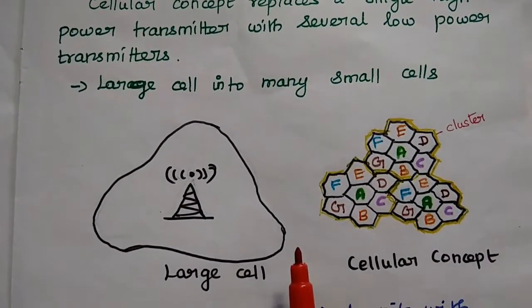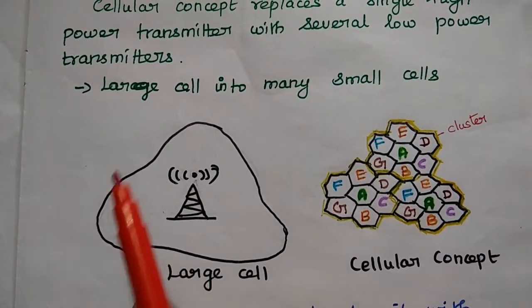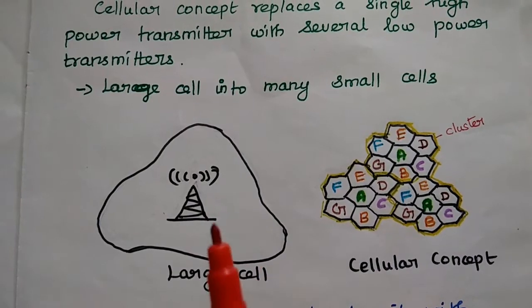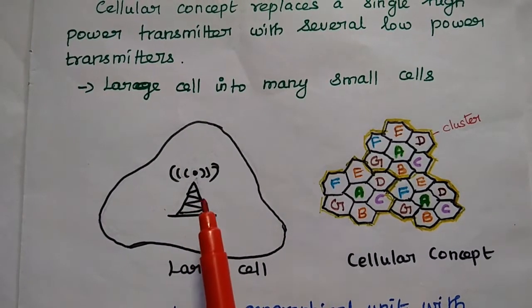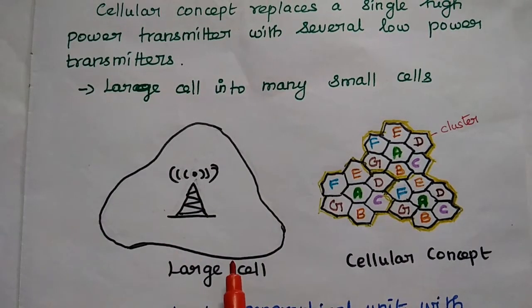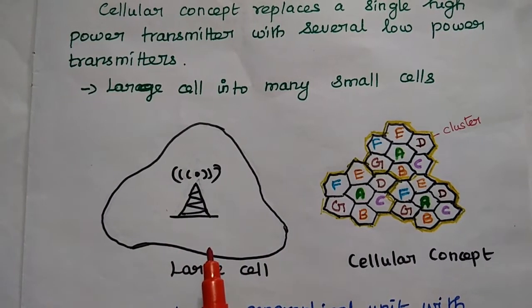In mobile communication, if you are going to consider a large geographical area with a single high power transmitter, then it is difficult to allocate the channels to all the users within the coverage limit.